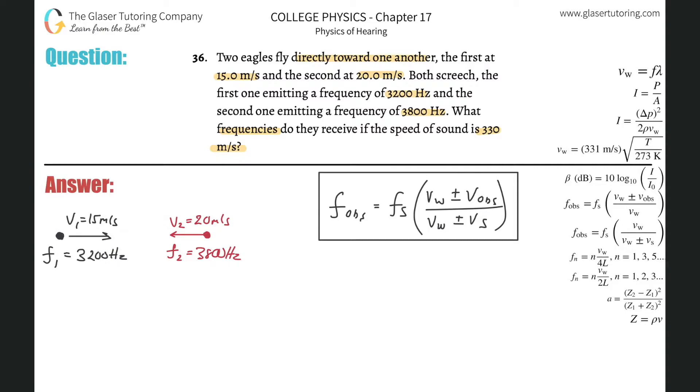And then let's say the problem doesn't have, let's say the observer in the problem is not moving. Well, guess what? If the observer is not moving, what's the velocity of the observer? Well, it's zero. What's VW plus or minus zero? Well, just VW, right? And look, that's exactly what this formula is over here, our SOMS formula, right? S-O-M-S, S-O-M-S, stationary observer, moving source.